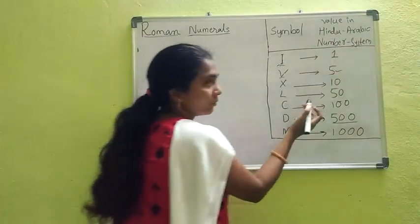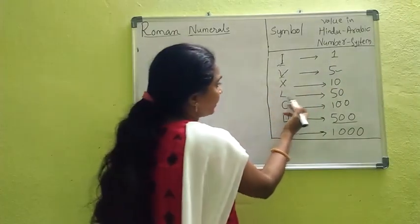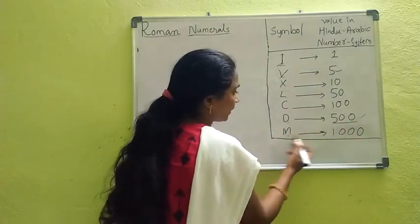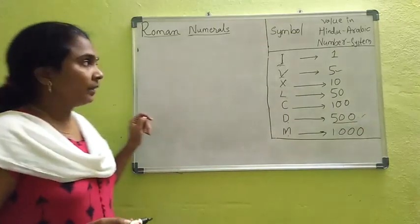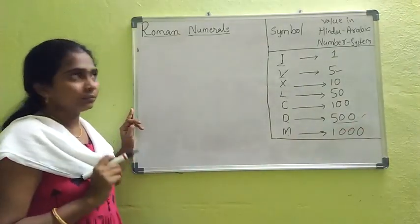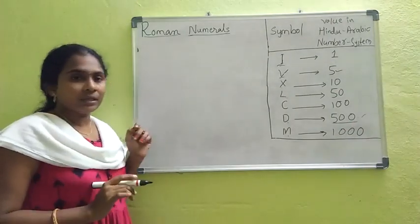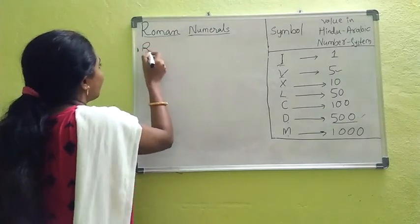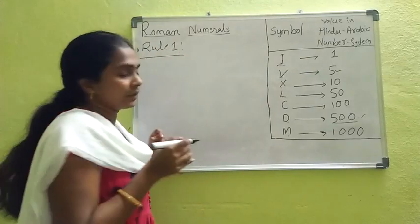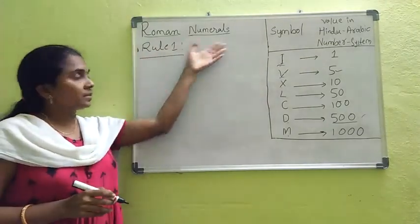I means 1, V means 5, X means 10, L means 50, C means 100, D means 500, and M means 1000. In Roman numerals we do not have a zero value. To write Roman numerals, we have four rules. This is a very interesting topic — listen carefully, make sure there is zero disturbance for you.